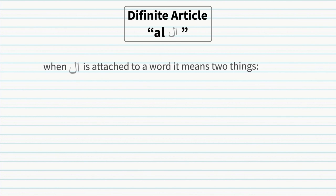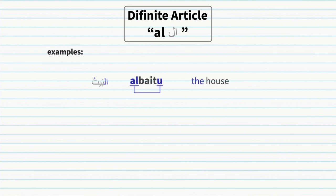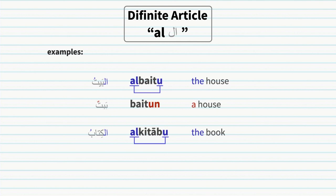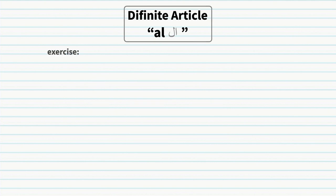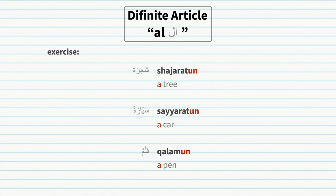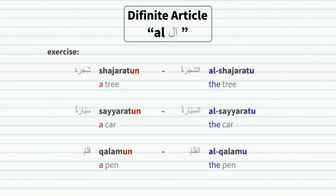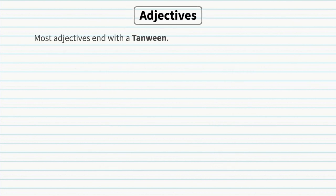The definite article 'al': when 'al' is attached to a word it means two things — the word is a noun and the noun is definite. For example, al-baytu, al-kitabu. Notice how the tanween changes after adding the definite article: baytun changes to al-baytu. When adding 'al' to a word, the 'un' tanween changes to a damma. Exercise: can you change these indefinite nouns to definite? Pause if you need more time.